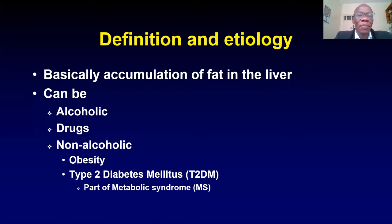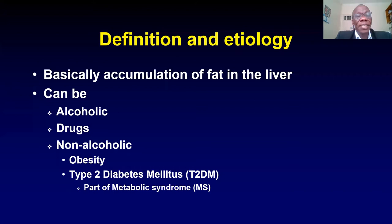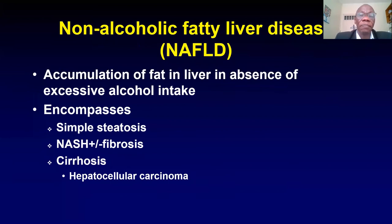By definition, fat in the liver is basically accumulation of fat in the liver, and it can be because of alcohol or some drugs — for example, some of the medicines used for treating HIV. But it can also be non-alcoholic, which is basically obesity and type 2 diabetes mellitus, which is part of metabolic syndrome. For this presentation, I am going to confine myself to non-alcoholic fatty liver.